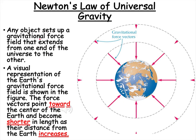Any object sets up a gravitational force field that extends from one end of the universe to the other. A visual representation of the earth's gravitational force field is shown in the figure. The force vectors point towards the center of the earth and become shorter in length as their distance from the earth increases. Our gravitational force fields point towards earth. They're shorter the further out you are because you have a smaller gravitational pull the further away from the center you are, and then the closer to the center you get, the larger they get.